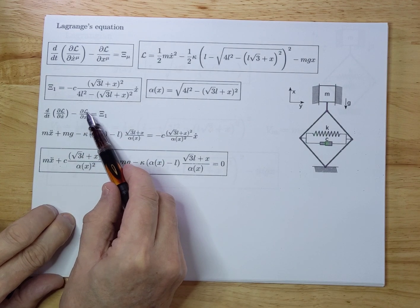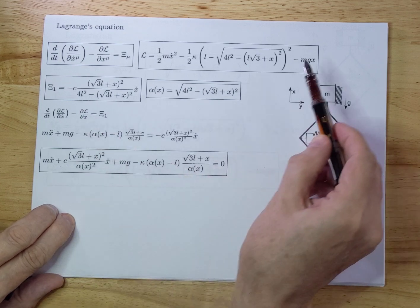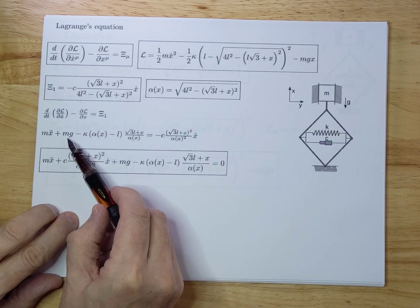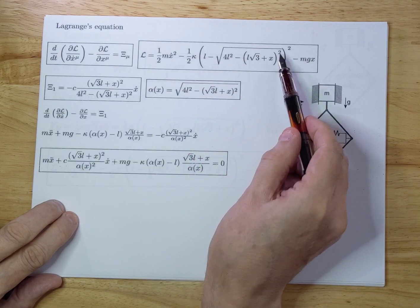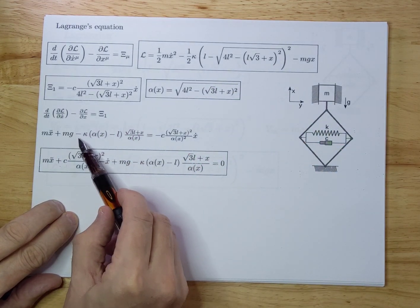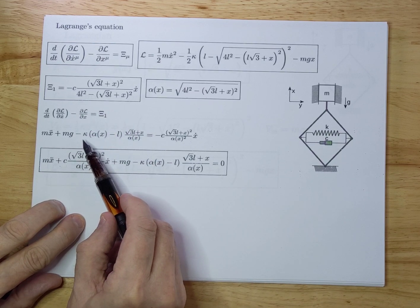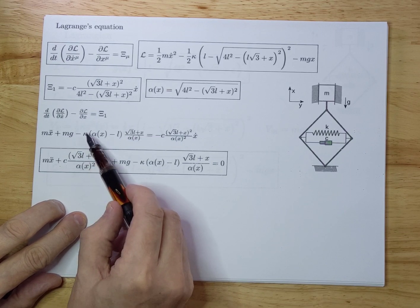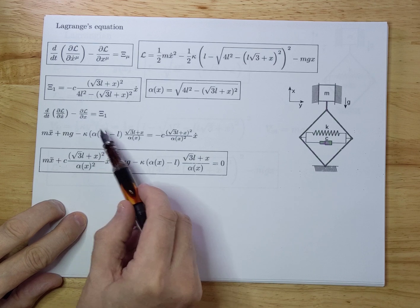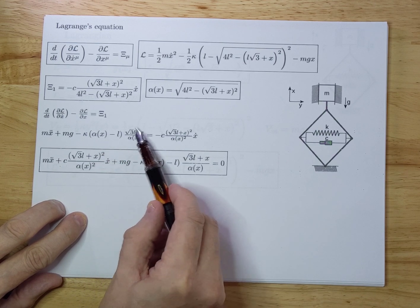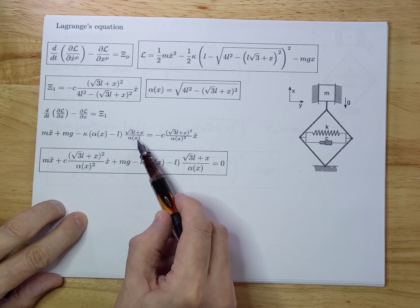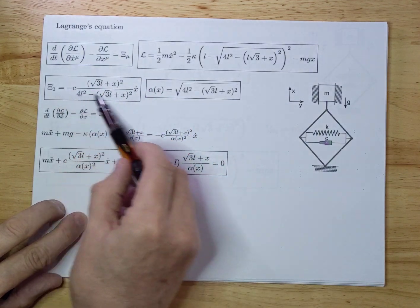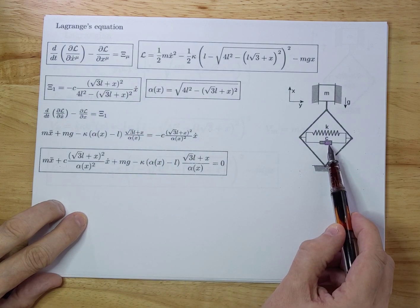Now you have to minus the Lagrangian towards x. Let's start with a simple term here. So it is minus minus, that becomes a plus. You get mg here if you differentiate that towards x. If you differentiate this towards x, you get this piece. You can easily verify that. It is just an exercise in calculus. It is definitely correct. So minus k times alpha(x) minus L times square root of 3L plus x over alpha(x). That equals the generalized force, which is the generalized force we calculated before of the damper.